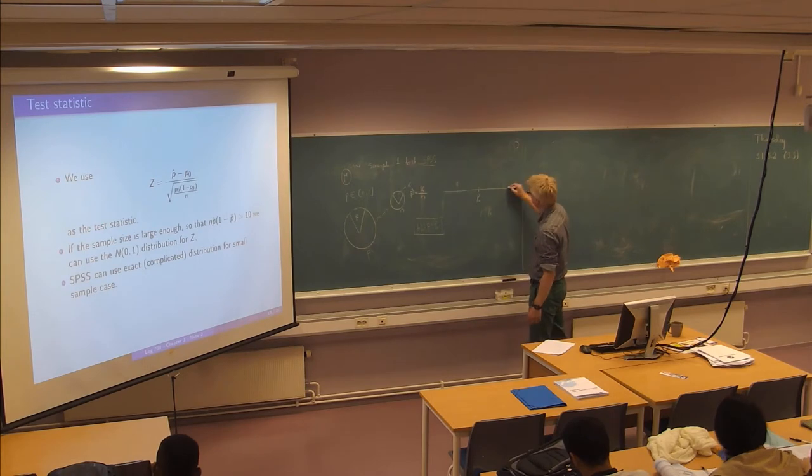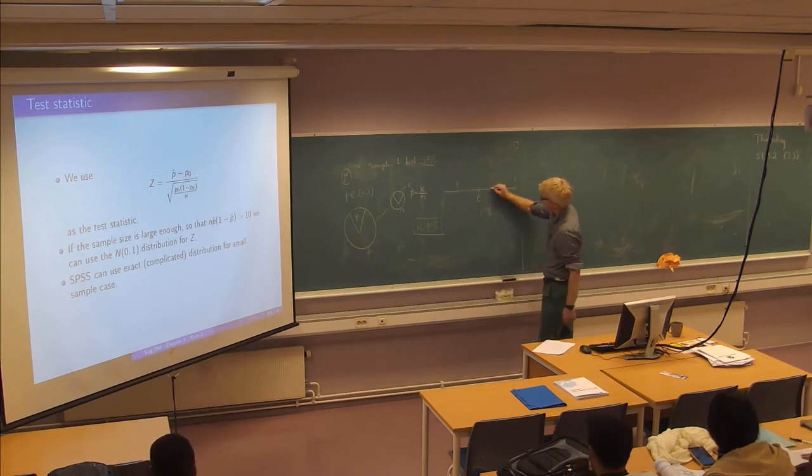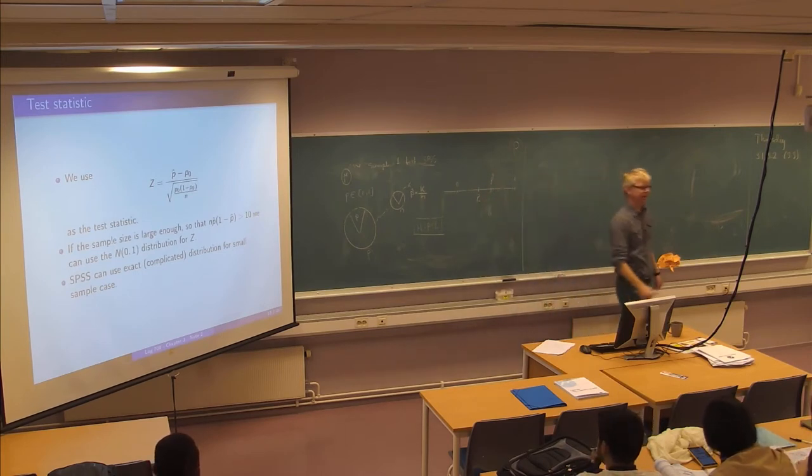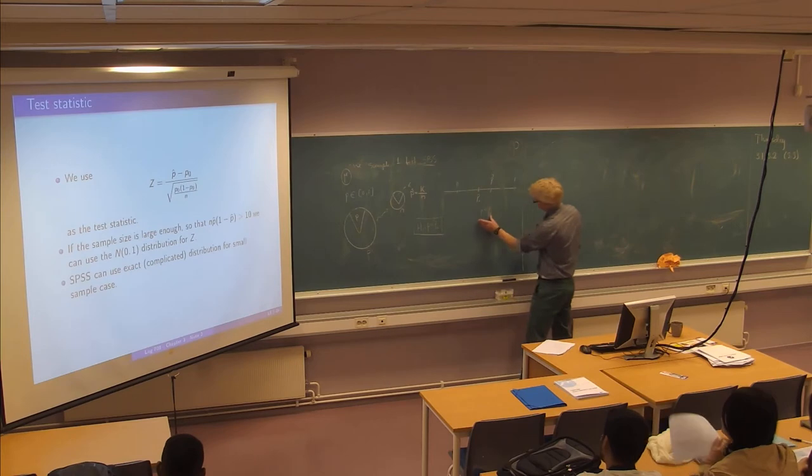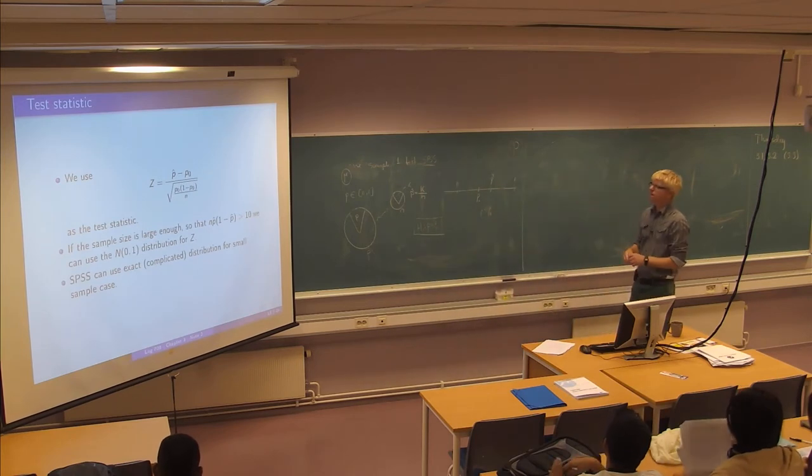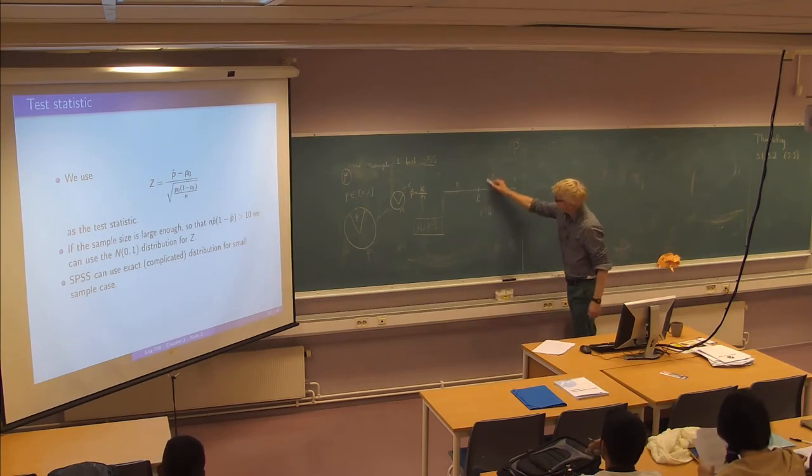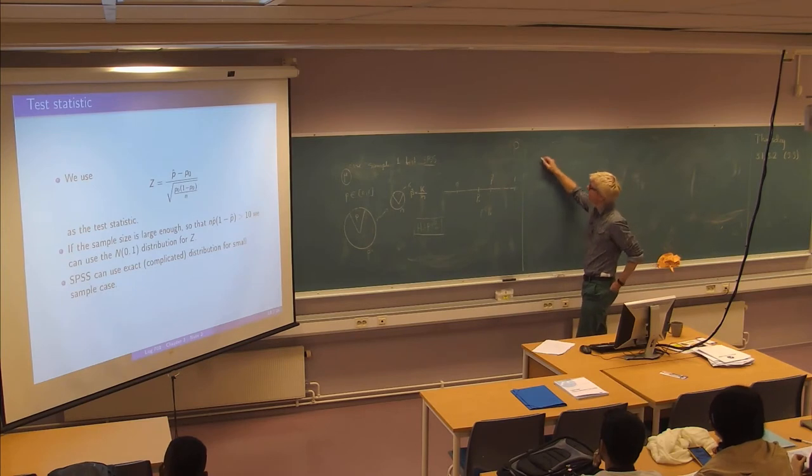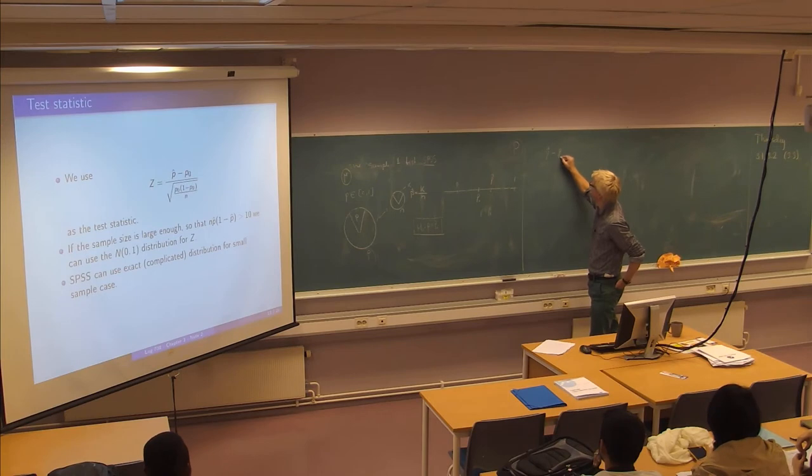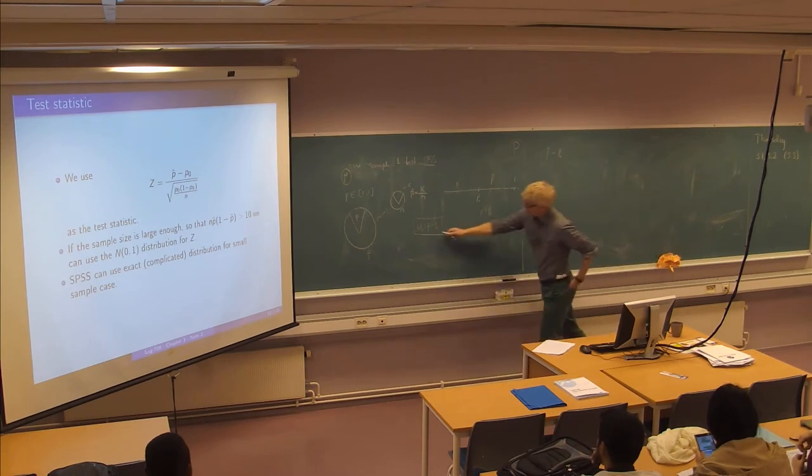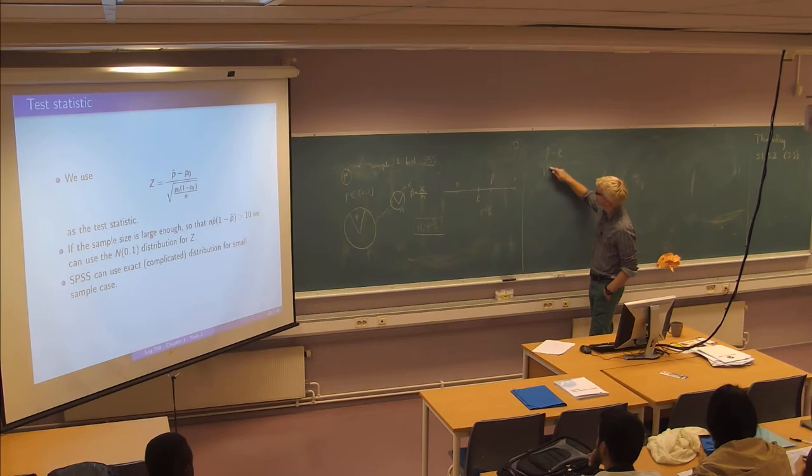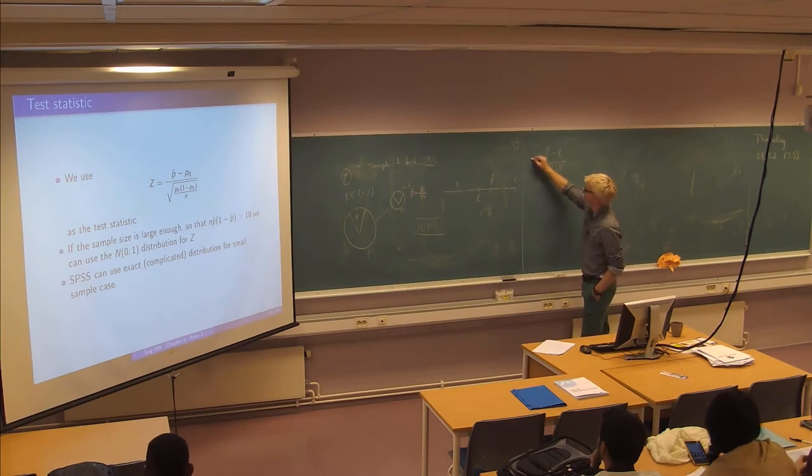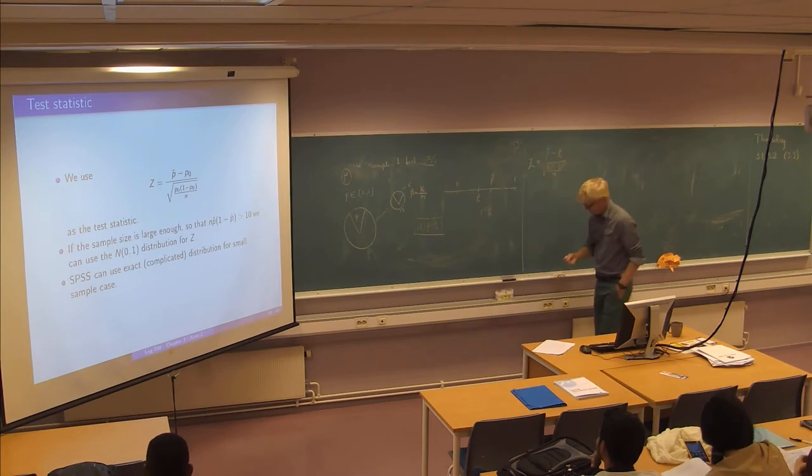So here is 0. And here somewhere is 1. And then you observe P hat on some side of P0. And then the question is, as always, is this a significant evidence that this is true in favor of that? And the question has to be answered by looking at the test statistic. And in this case, we don't look at P hat itself, but we look at what I have called set up there. So you take P hat, you subtract, you subtract the fixed value from here. And then just divide by this. And then I call it set.